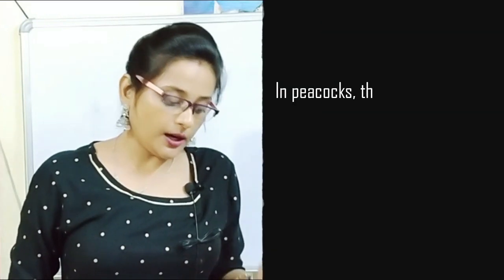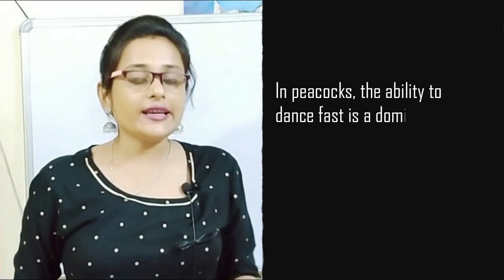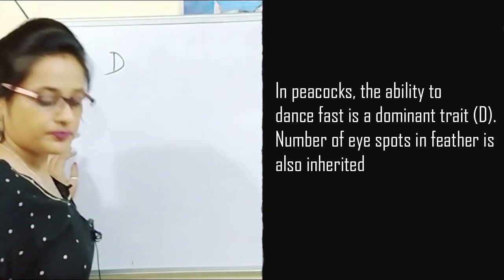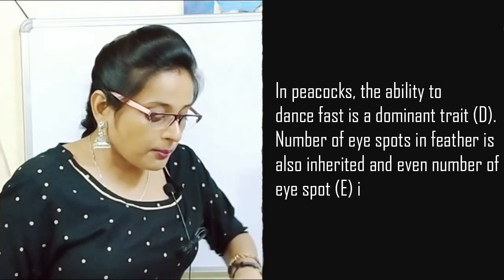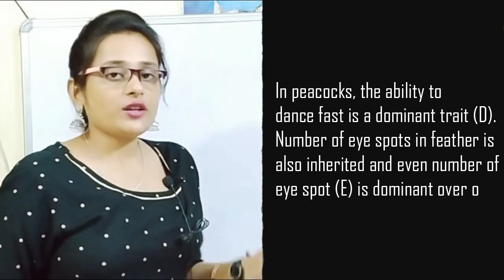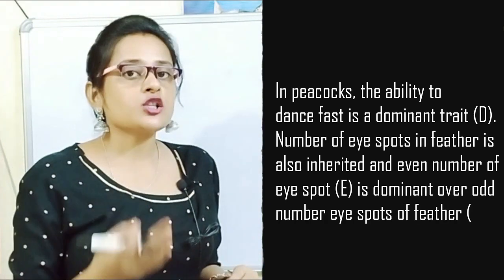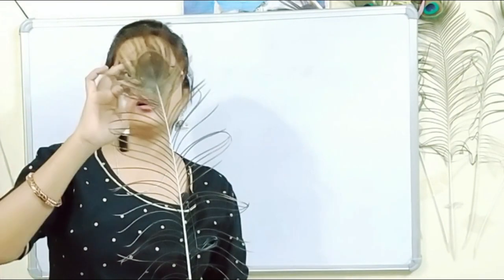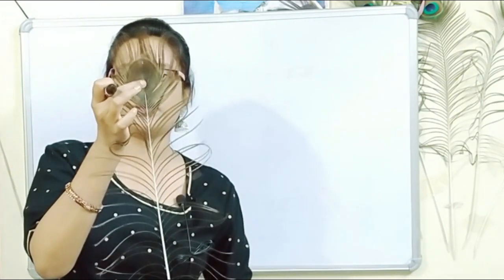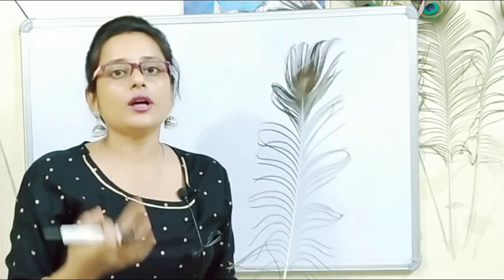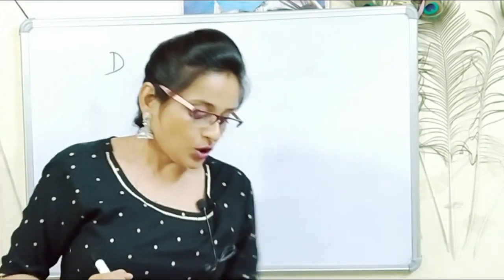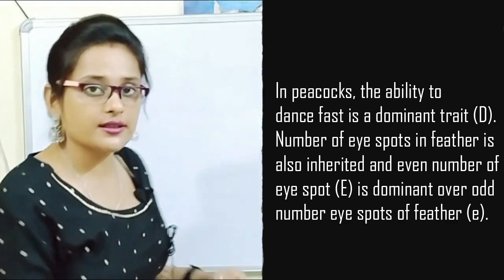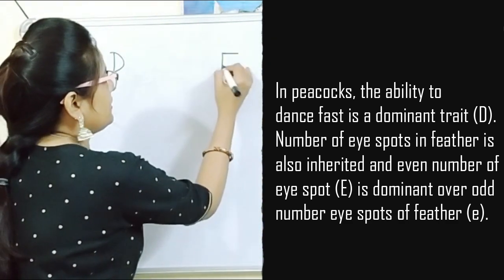Next question: in peacocks, the ability to dance fast is a dominant trait represented by capital D. The number of eye spots in feathers is also inherited. Eye spots are the markings on each feather — the more eye spots, the better for the peacock. Capital E gives an even number of eye spots and is dominant over small e, which gives an odd number of eye spots.